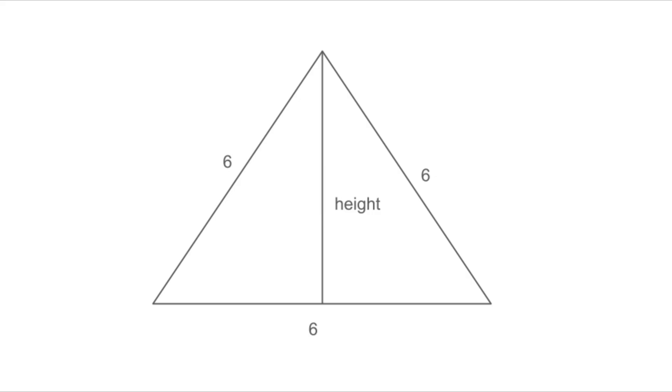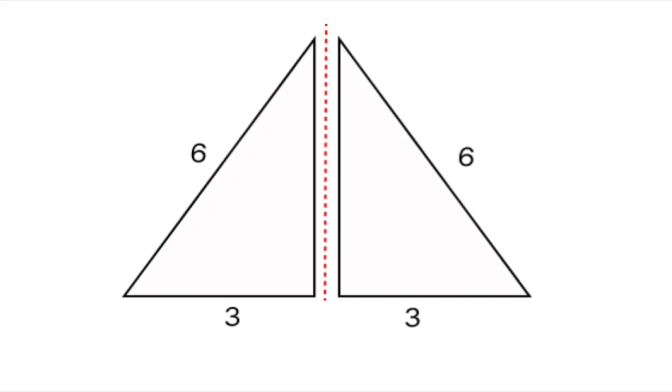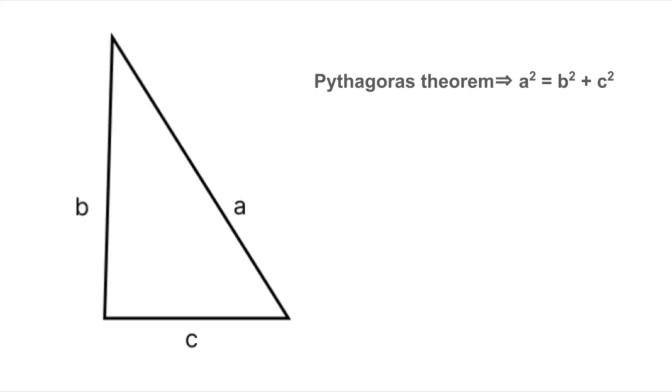To find that height, here's what we'll do. We'll drop an altitude from the top vertex straight down to the base. Think of it like slicing the triangle in half right down the middle. Now look what we've made. Two right triangles. In one of them, we know the hypotenuse is six. That's the side of the equilateral triangle. The base is three, because the altitude split the base in half. And the height is what we're solving for. Let's call it H. That's a perfect setup to use the Pythagorean theorem.